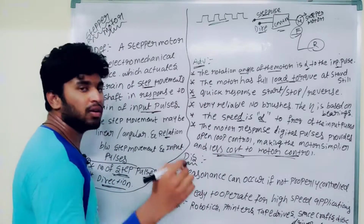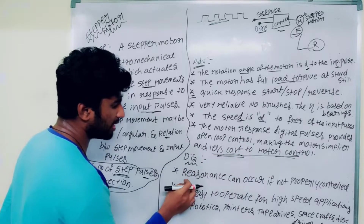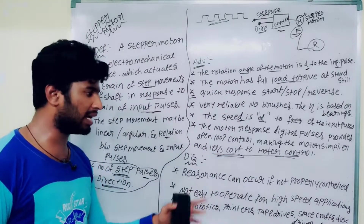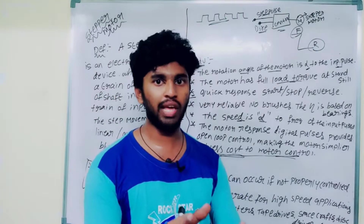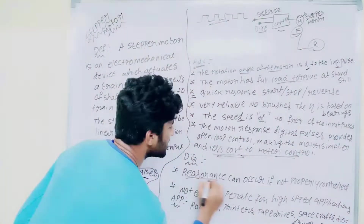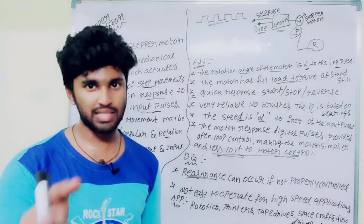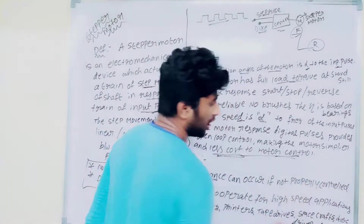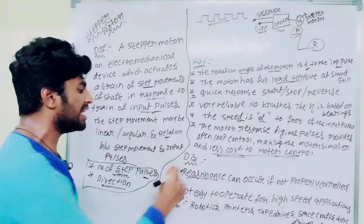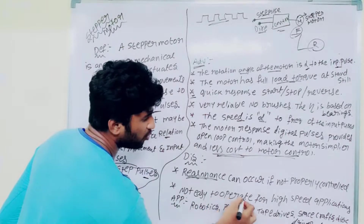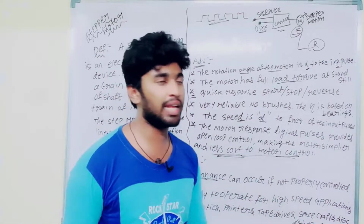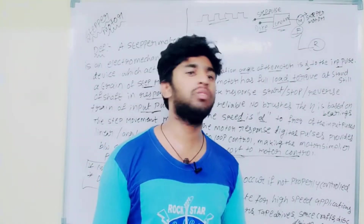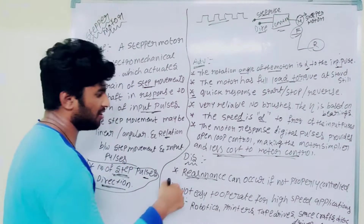So there are 6 advantages and 2 disadvantages. The first disadvantage is that resonance can occur if not properly controlled. If we do not control the stepper motor operation properly, resonance can be produced. The second disadvantage is that it is not easy to operate for high speed applications — the stepper motor is a slow motor, working step by step.